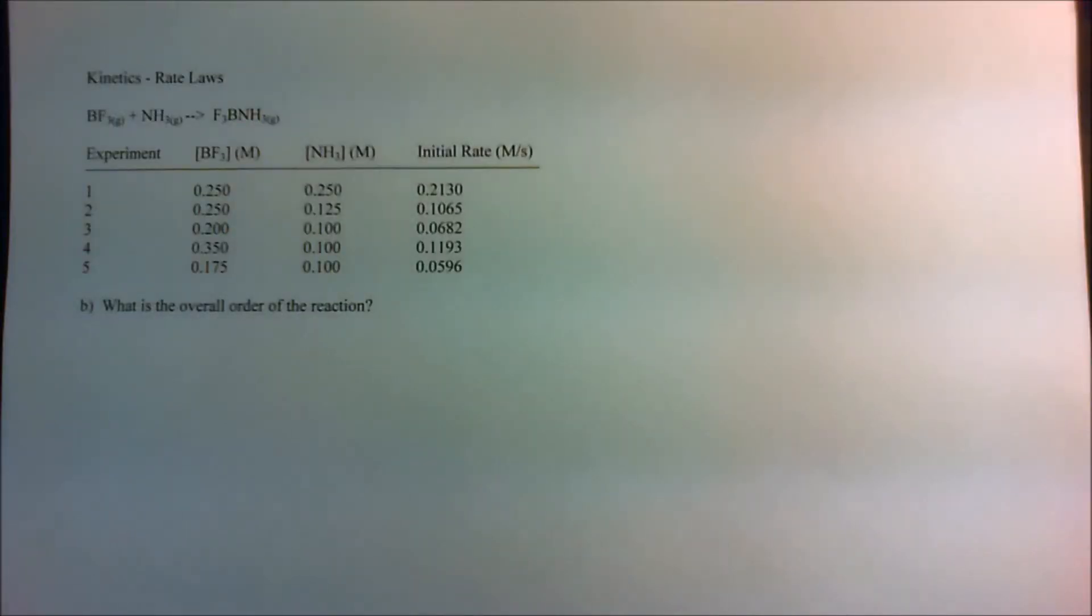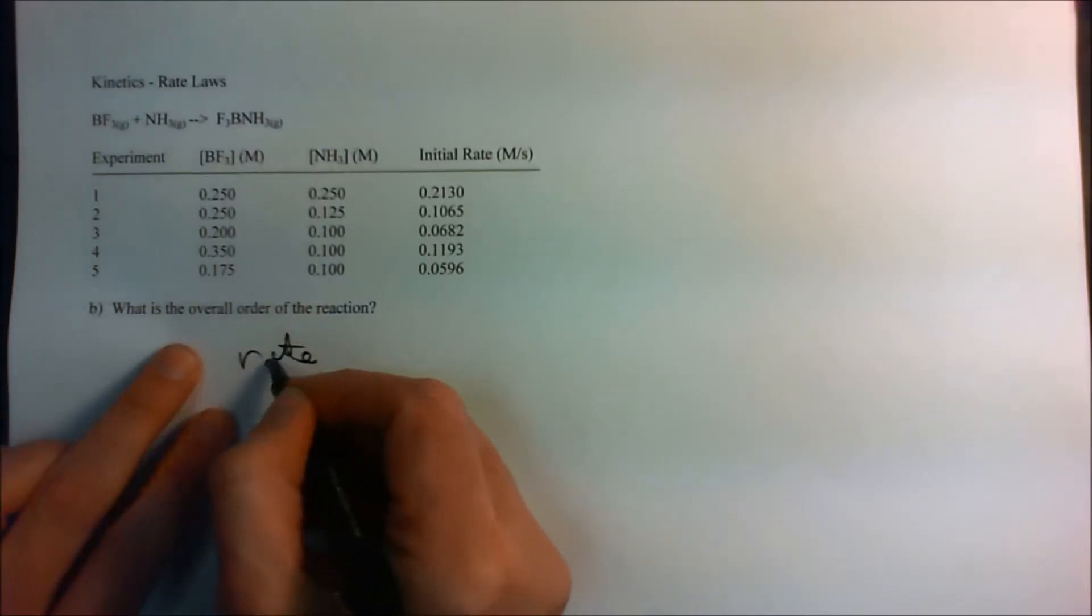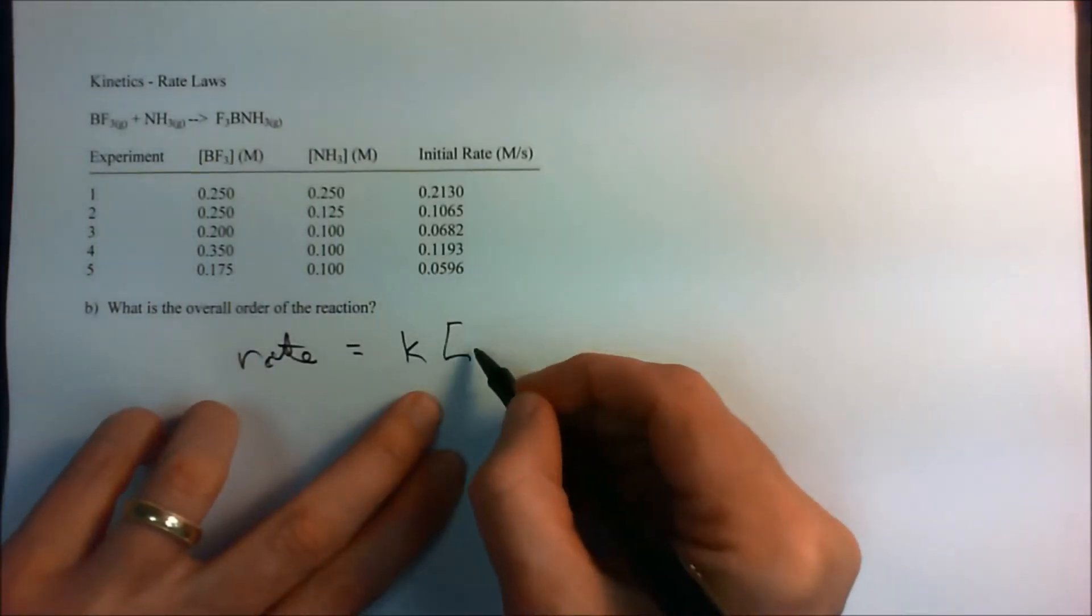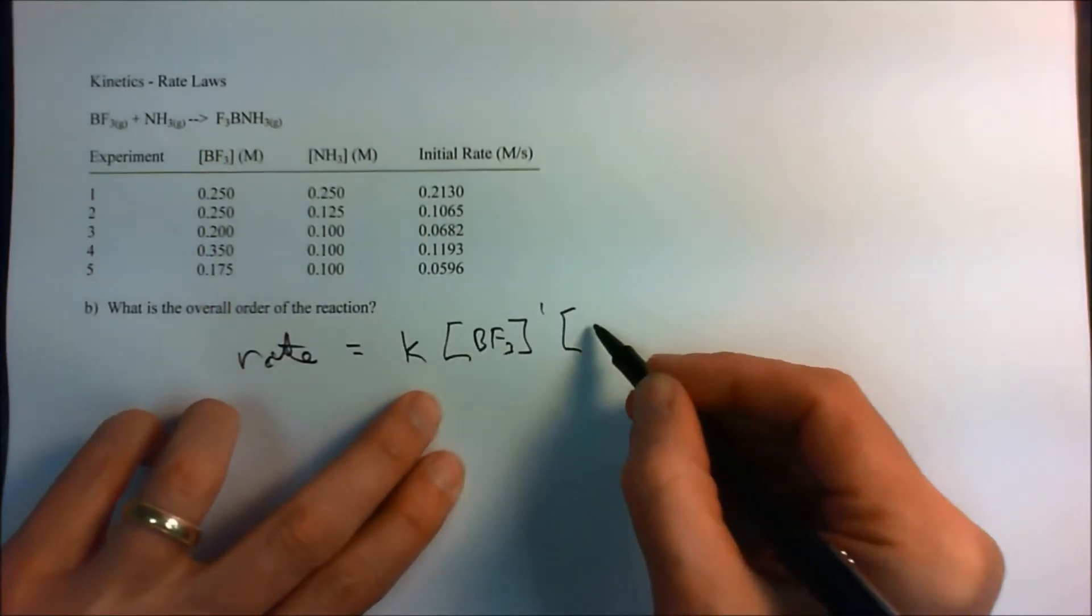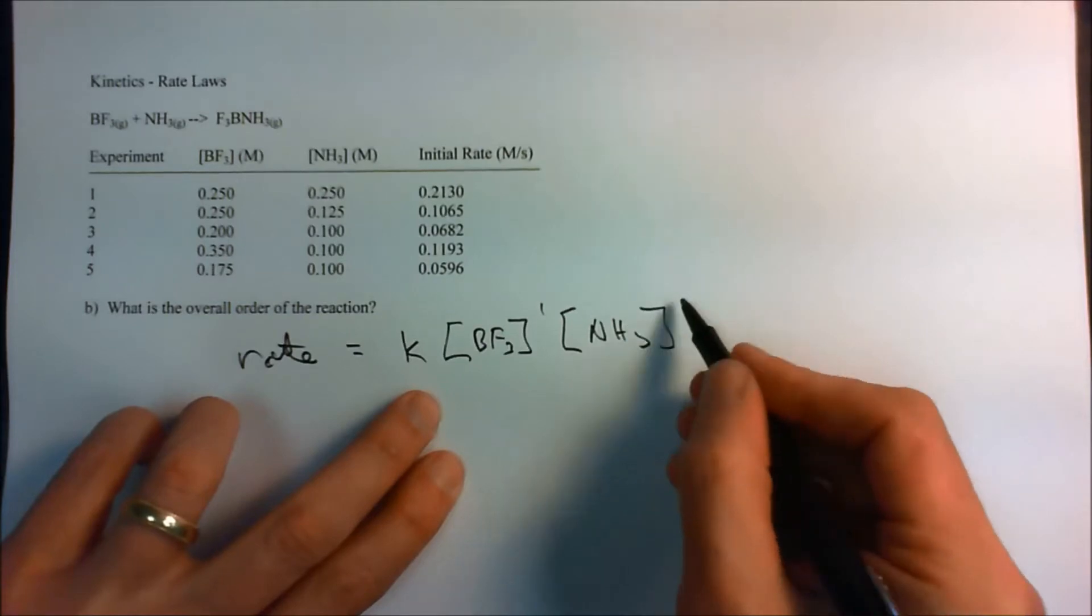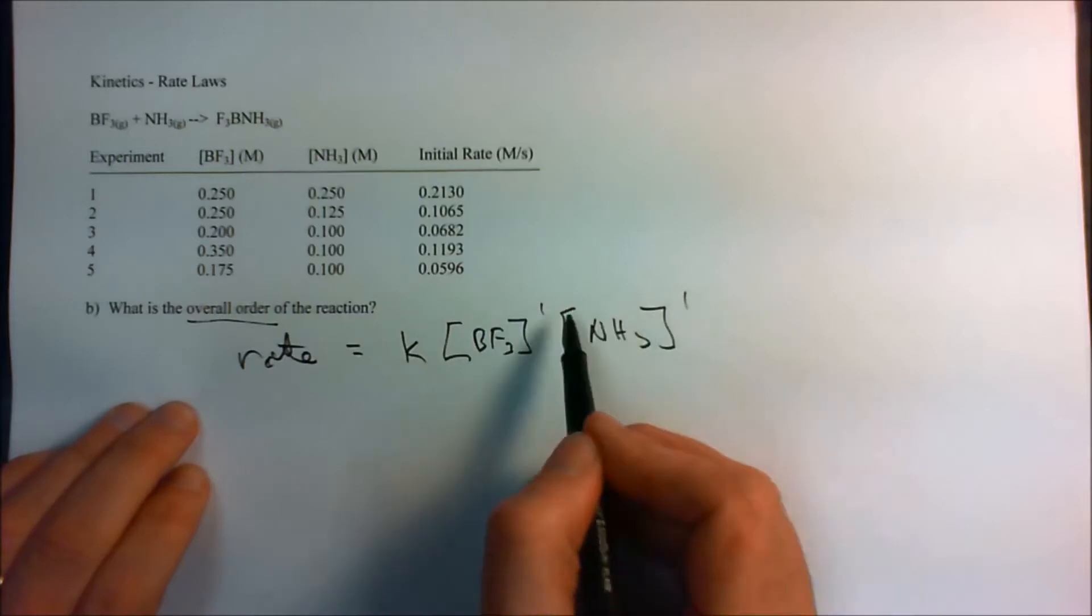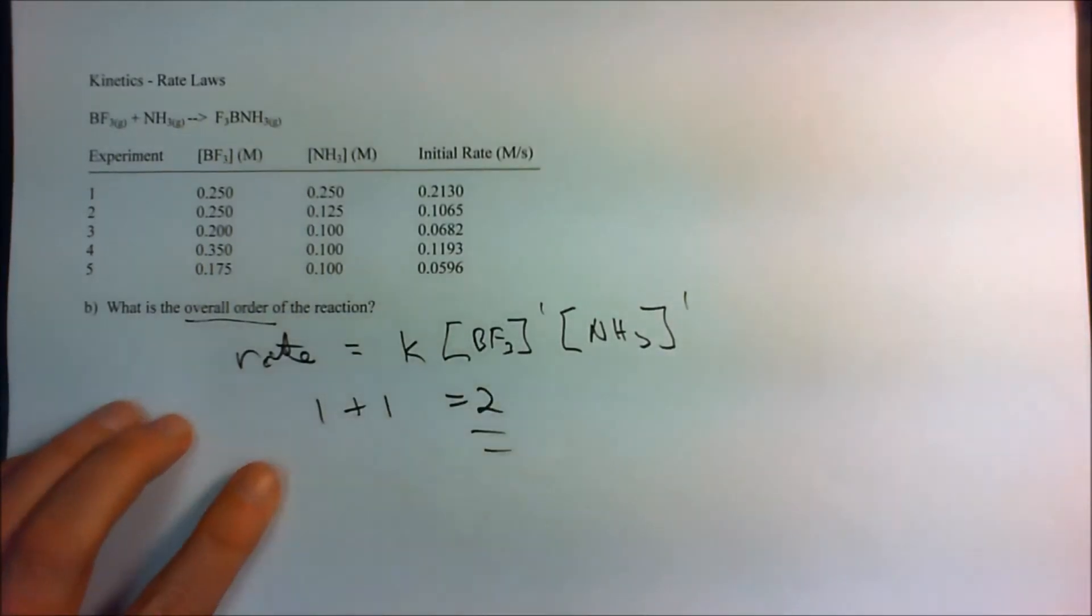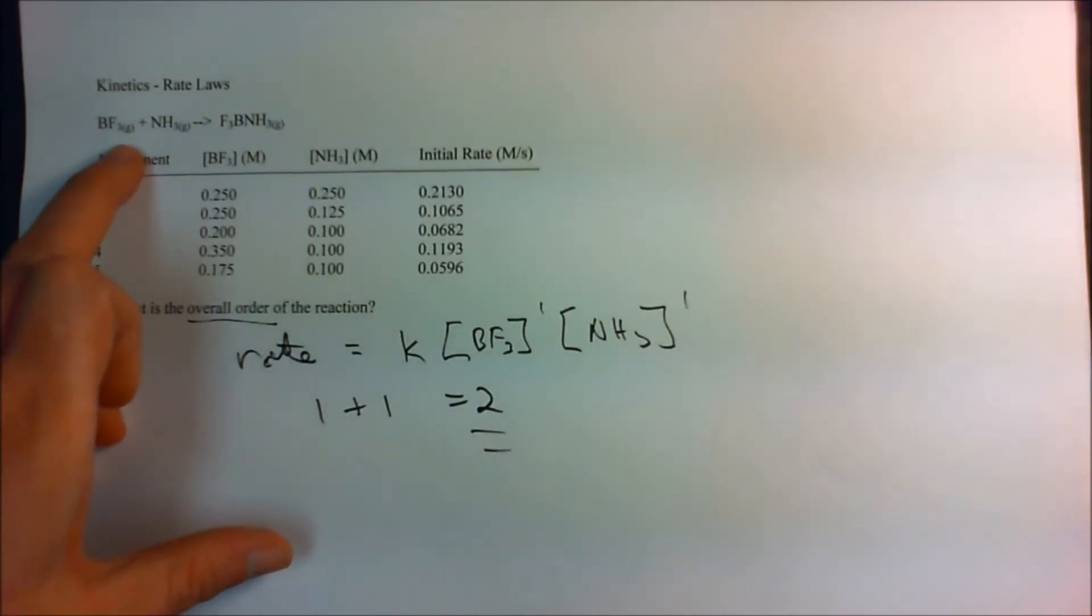So what's the overall order of the reaction? Well, we determined that the rate law in the previous part of the problem, the rate was given by the reaction rate constant times BF3 concentration to the first power and ammonia also to the first power. So the overall order is the sum of these two things. So 1 plus 1 equals 2. So the overall order is 2. The reaction is overall order, second order.